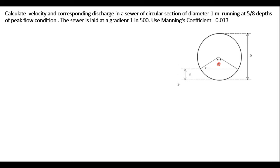In this partial flow case, the depth of flow (small d) is given as 5/8 times the depth of the full flow condition, that is 5/8 into 1 meter. We are asked to determine the velocity and corresponding discharge in this partial flow case. For such problems, we first need to derive the formula for calculating the area of flow in the partial flow case.